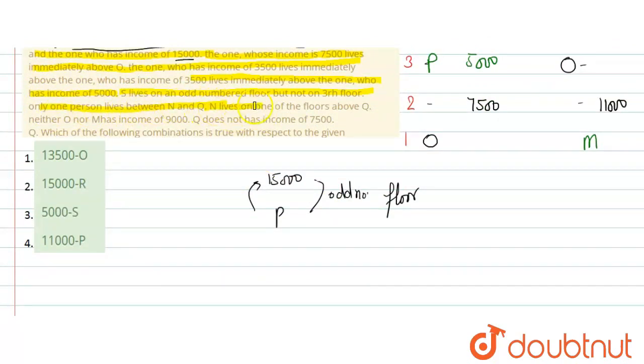S lives on odd numbered floor but not on third floor. So S is either O or neither M has 9000 salary. Q does not have income of 7500. Which of the following combination is true with respect to the given information?